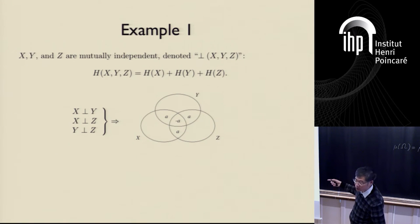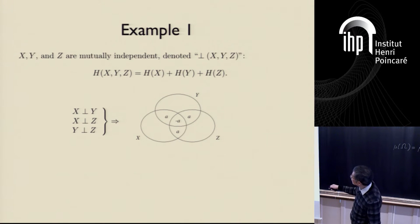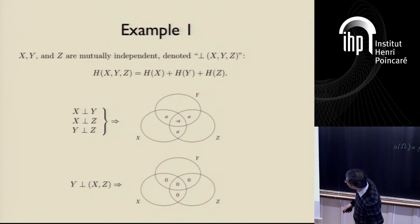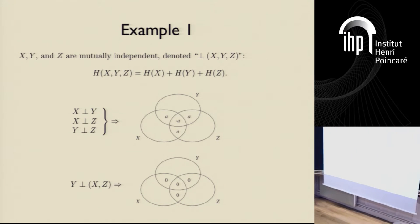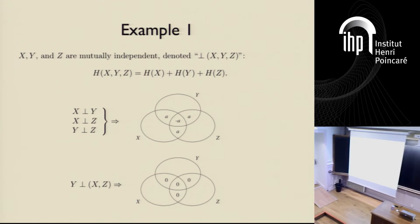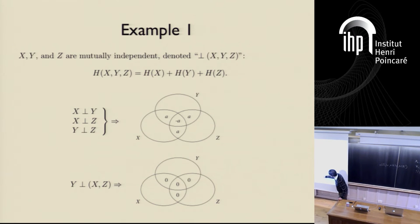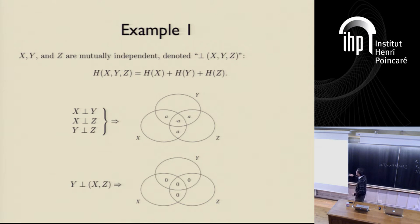If the middle atom is minus a, then the others must each be a. So if we impose the pairwise independence structure, and furthermore consider Y being independent of the pair X and Z — meaning I(Y; X, Z) = 0 — then intersecting Y with the union of X and Z gives three atoms that sum to zero. Those three atoms are a, a, and minus a, so their sum being zero forces a to equal zero, which forces all four atoms to zero. That is example one, showing that under certain conditions we can force certain atoms to zero.